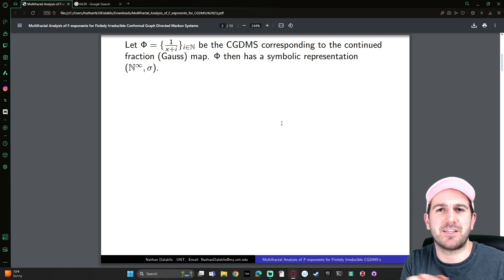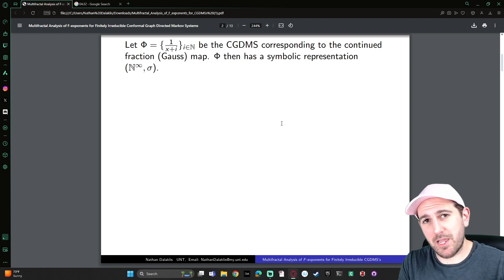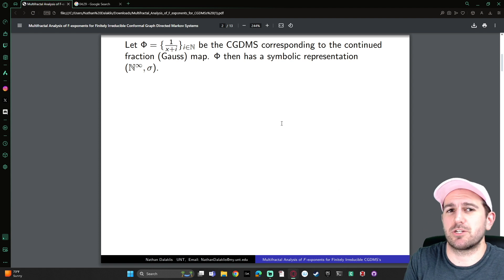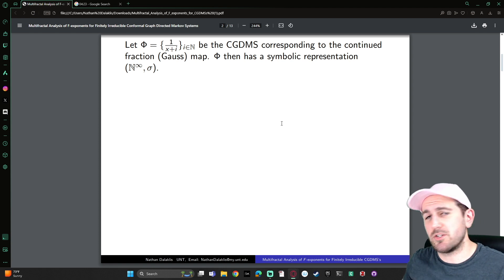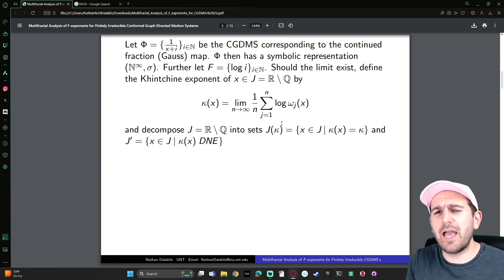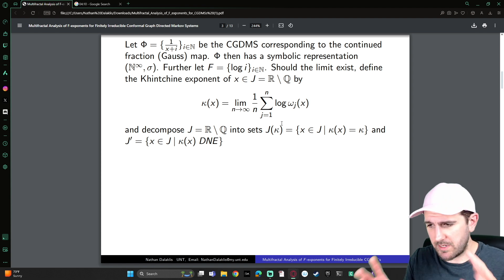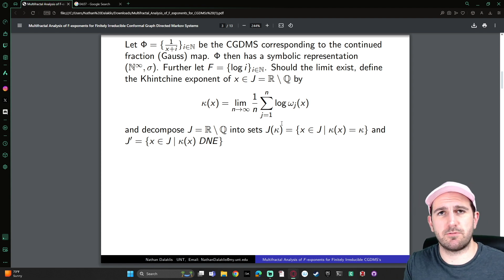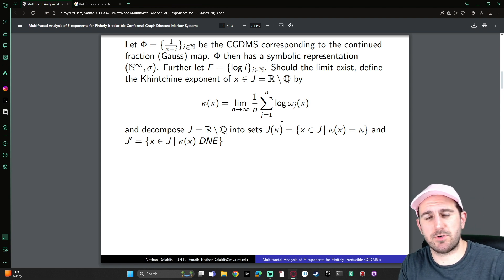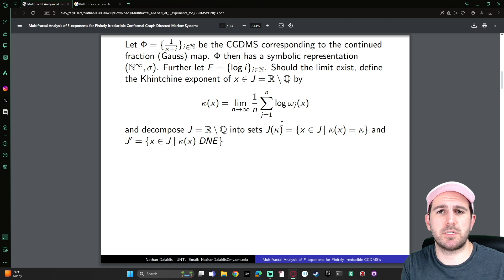If I want to do multifractal analysis in five minutes, I should probably start with an example and then continue by analogy. So let's let phi be a conformal graph-directed Markov system corresponding to the continued fraction, or Gauss map. Then phi has a symbolic representation given by the bare space with a shift map. And let F be a family of Holder functions, which in this case we're going to look at the Khinchin exponent, because I want to eventually talk about a large class of potential families. This Khinchin exponent measures the average geometric growth rate of partial quotients by averaging together the logs of particular symbols that occur in your continued fraction expansion.